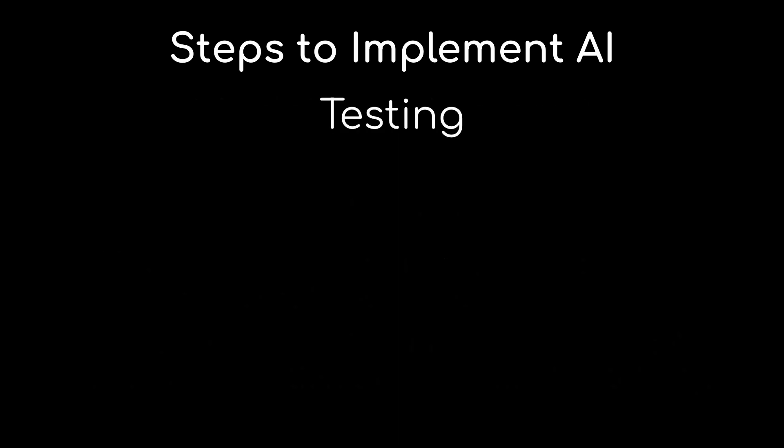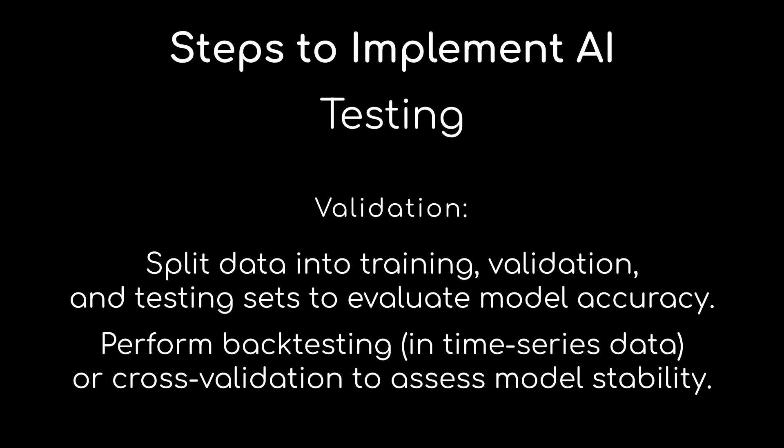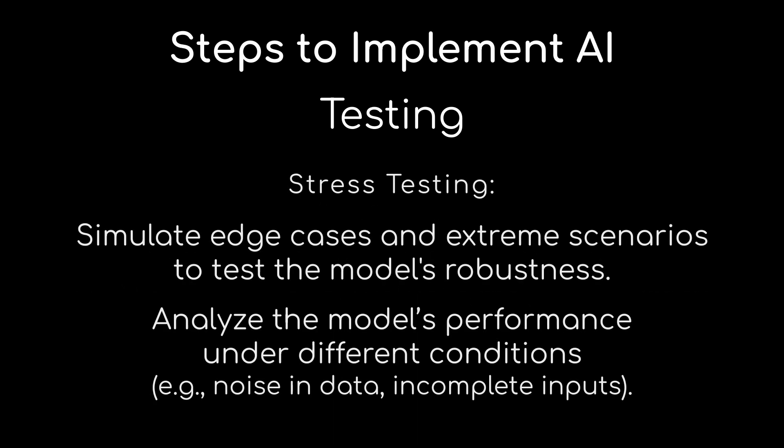Next is the testing phase. We're going to validate the accuracy of our model by splitting our data into training, validation, and testing sets. We're going to perform benchmarking and backtesting for things like time series data, or cross-validate to assess the model's stability. We'll also do stress testing — simulating edge cases and extreme scenarios to test the model's robustness so it doesn't break while users are consuming it. We're going to analyze the model's performance under different conditions, like noisy data or incomplete inputs.